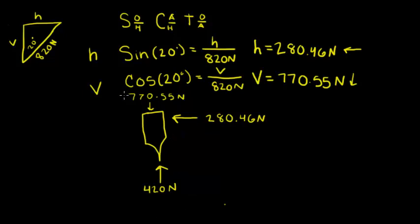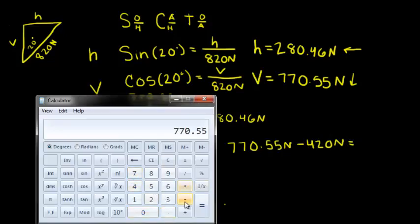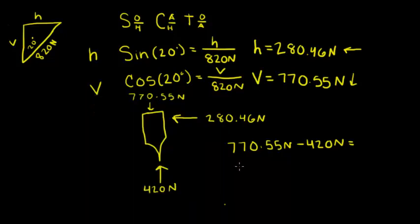We can find the vector sum of the vertical components. We have a 770.55 newton force downward and only a 420 newton force upward, so the resultant of these two is going to be downward. To figure out by how much, we subtract 420 newtons from 770.55 newtons. Our total vertical force is 350.55 newtons downward.